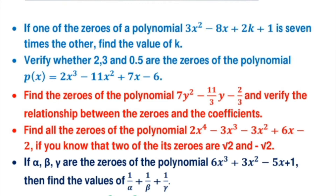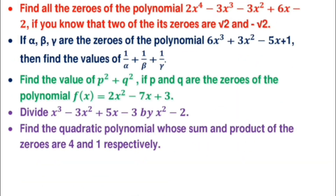In the next question, if α, β, γ are the zeros of the polynomial 6x³ + 3x² − 5x + 1, find the value of 1/α + 1/β + 1/γ. First find the relationships between the zeros and the coefficients, then do simple calculation. In another question, find p² + q², where p and q are the zeros of the polynomial f(x).